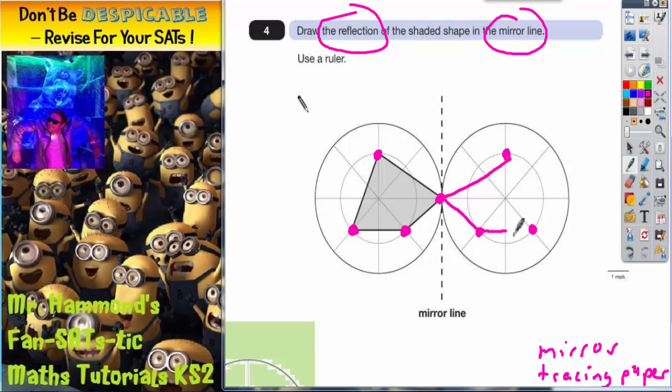Obviously you would do this with a ruler because if you didn't do it with a ruler you may actually lose some marks. Make sure you do it with a ruler because it does say to do it there. The third way you could have done this was to use tracing paper.